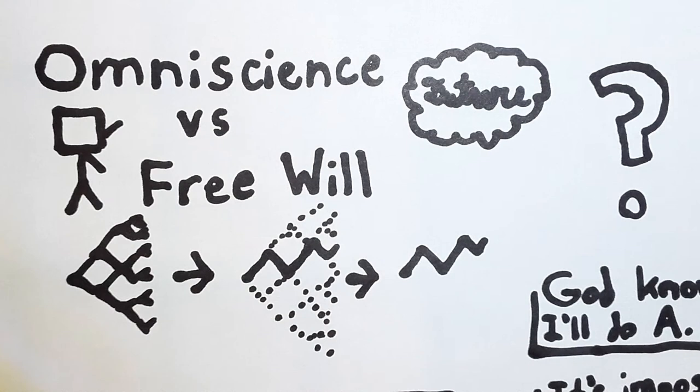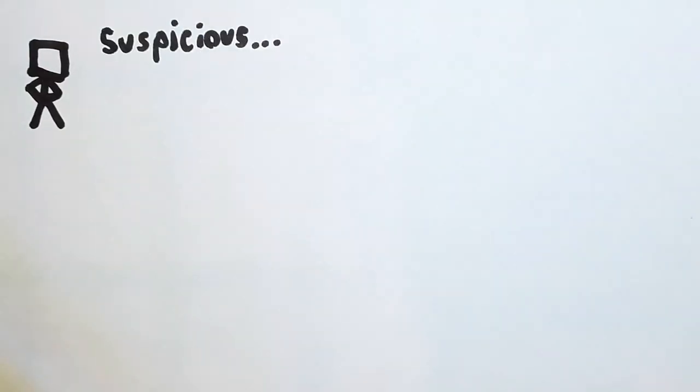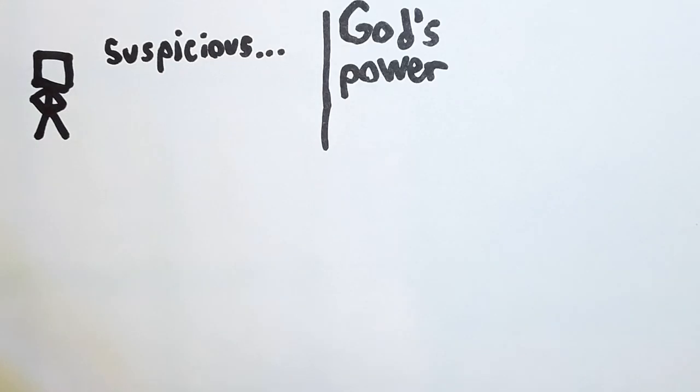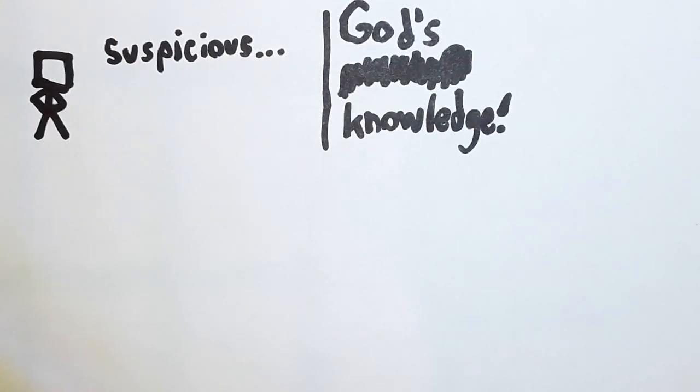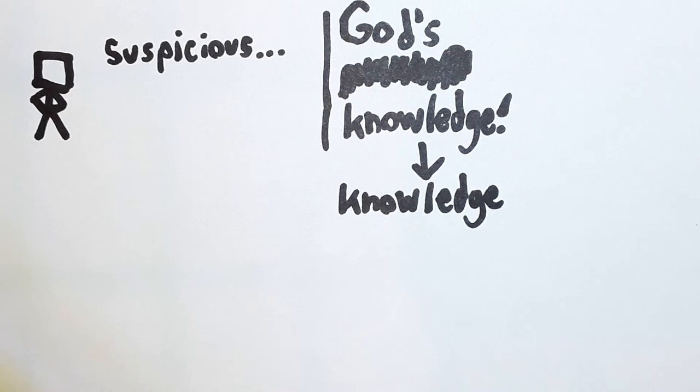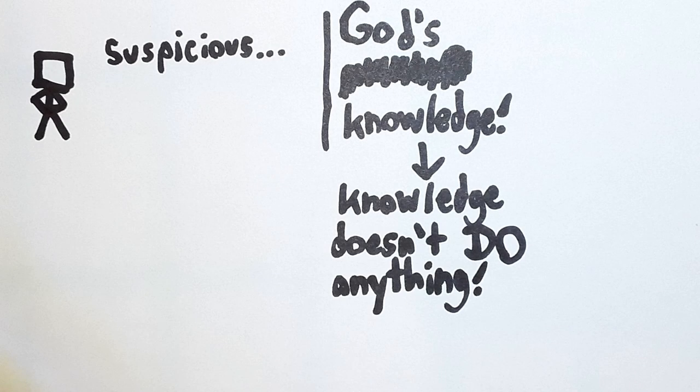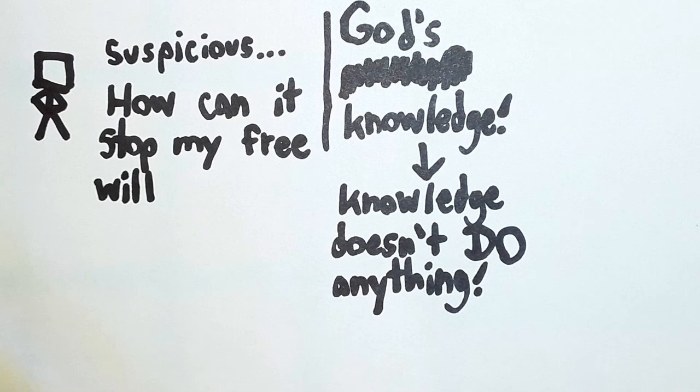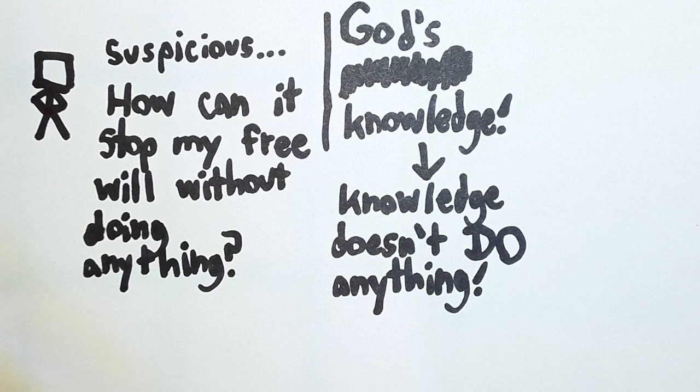How do we get around this? Well, right off the bat, you should be very suspicious of this argument. Remember, we're not worried about God's power destroying free will. We're worried about God's knowledge. And knowledge can't do anything. So if this objection works, then God can take all my free will away without doing anything.